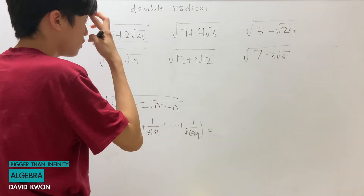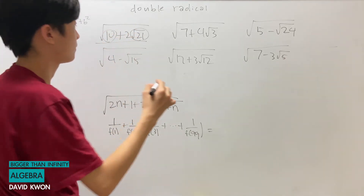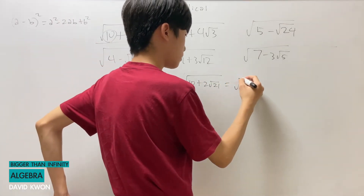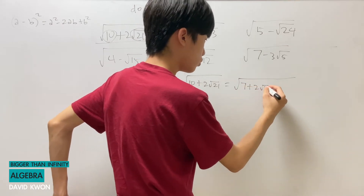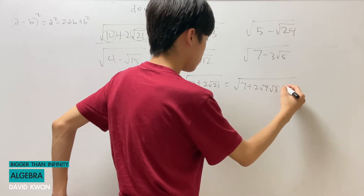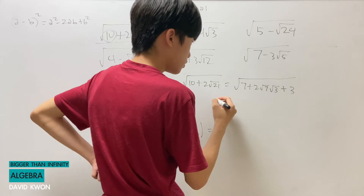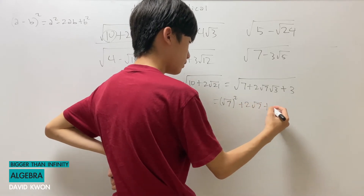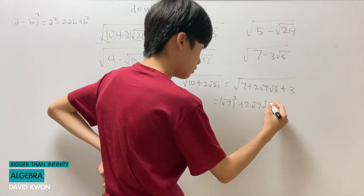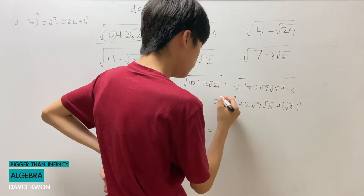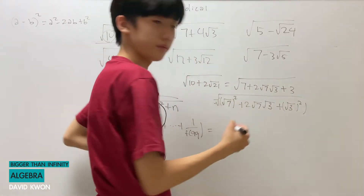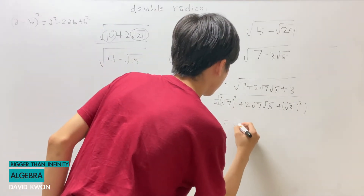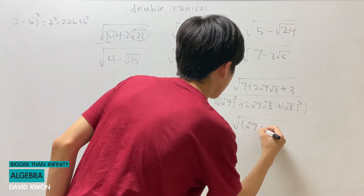From here we can break this apart into 7 plus 2 times square root of 7 times square root of 3 plus 3. So this is going to be square root of 7 squared plus 2 times square root of 7 times square root of 3 plus square root of 3 squared. From this, you can find that this is equal to the square root of (square root of 7 plus square root of 3) squared.